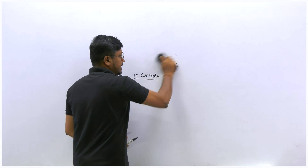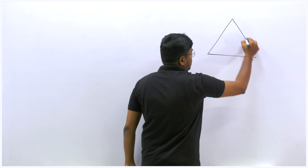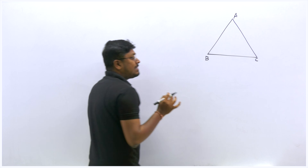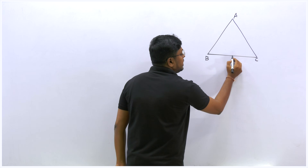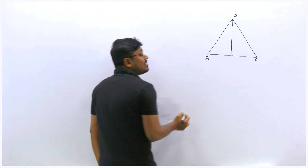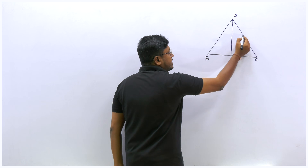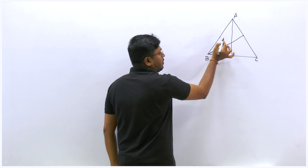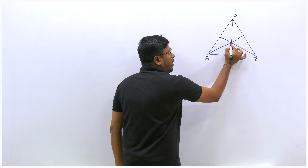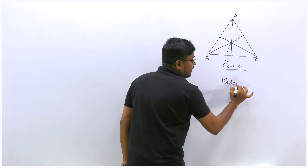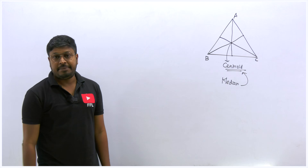Let's understand centroid first. Take triangle ABC. Assume BC is 10 centimeters — mark the midpoint at 5 cm and 5 cm. From the opposite vertex, draw a line to this midpoint; this line is called a median. Similarly, find the midpoint of AC and draw a median from vertex A. Find the midpoint of AB and draw a median from vertex C. The point where all three medians meet is called the centroid.